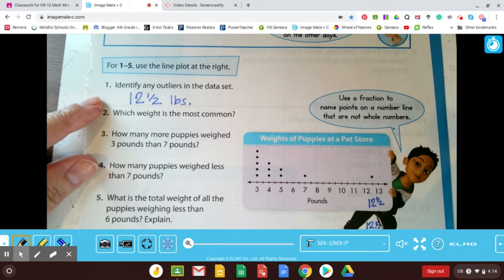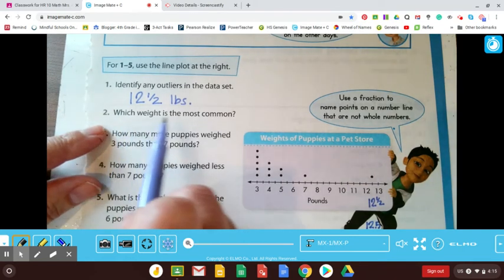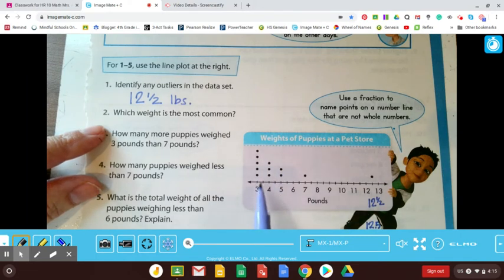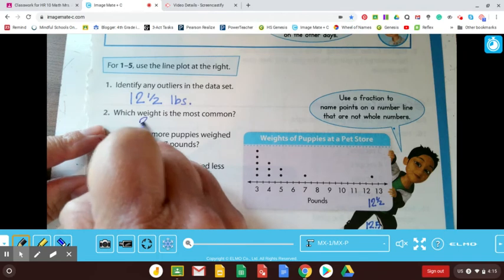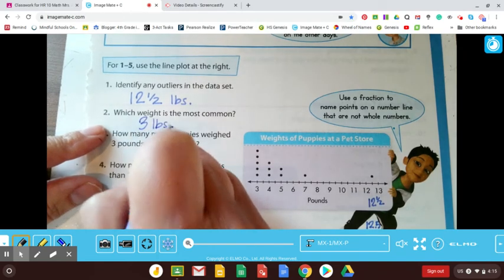Maybe he's like, what are some of those big dogs? Those Great Danes, or I have a neighbor who has a giant dog. I mean, this dog is big. I can't remember what it's called, but it's a big one. Which weight is the most common? Well, the most puppies are about three pounds. So I would say three pounds is the most common.